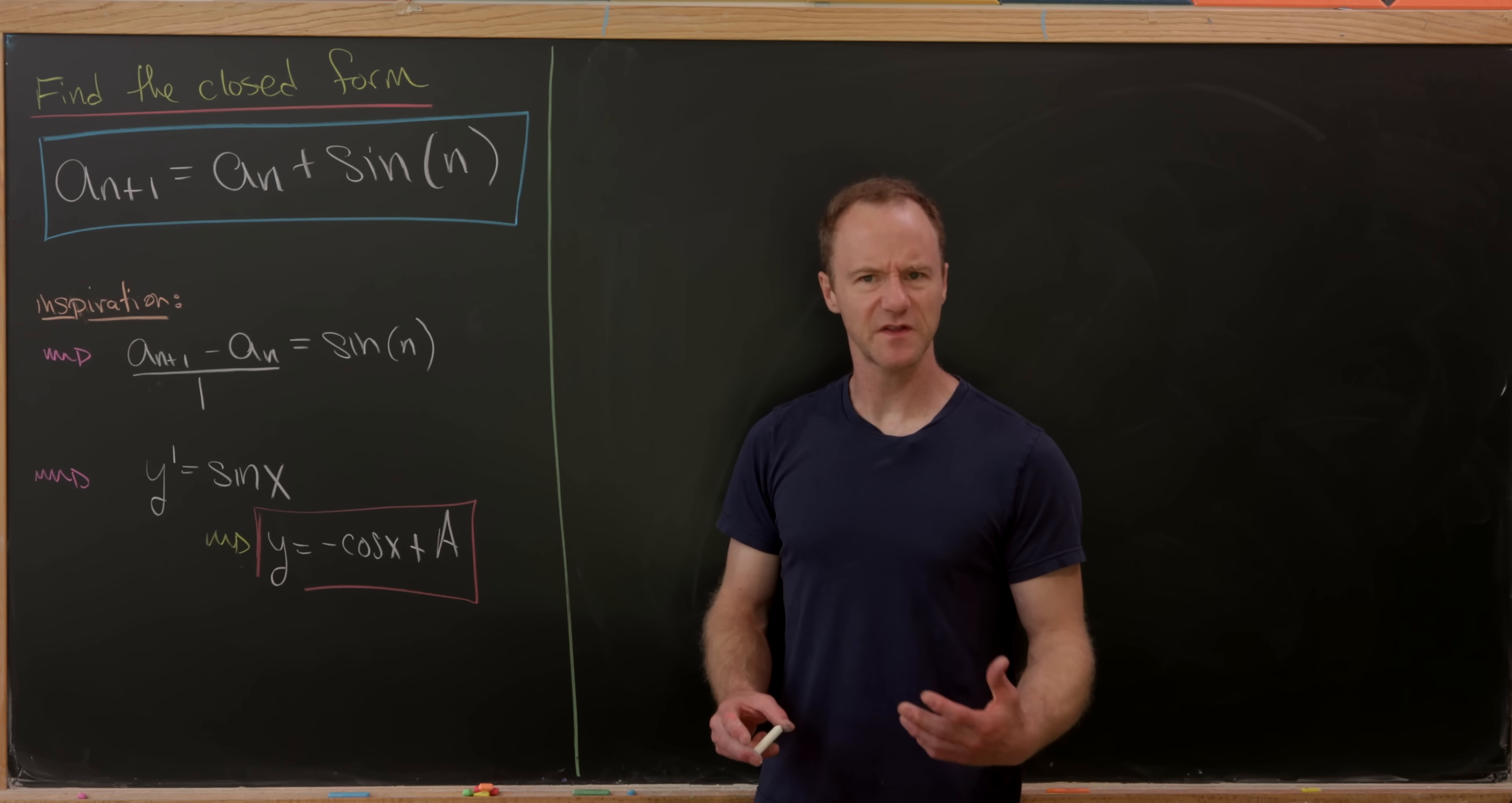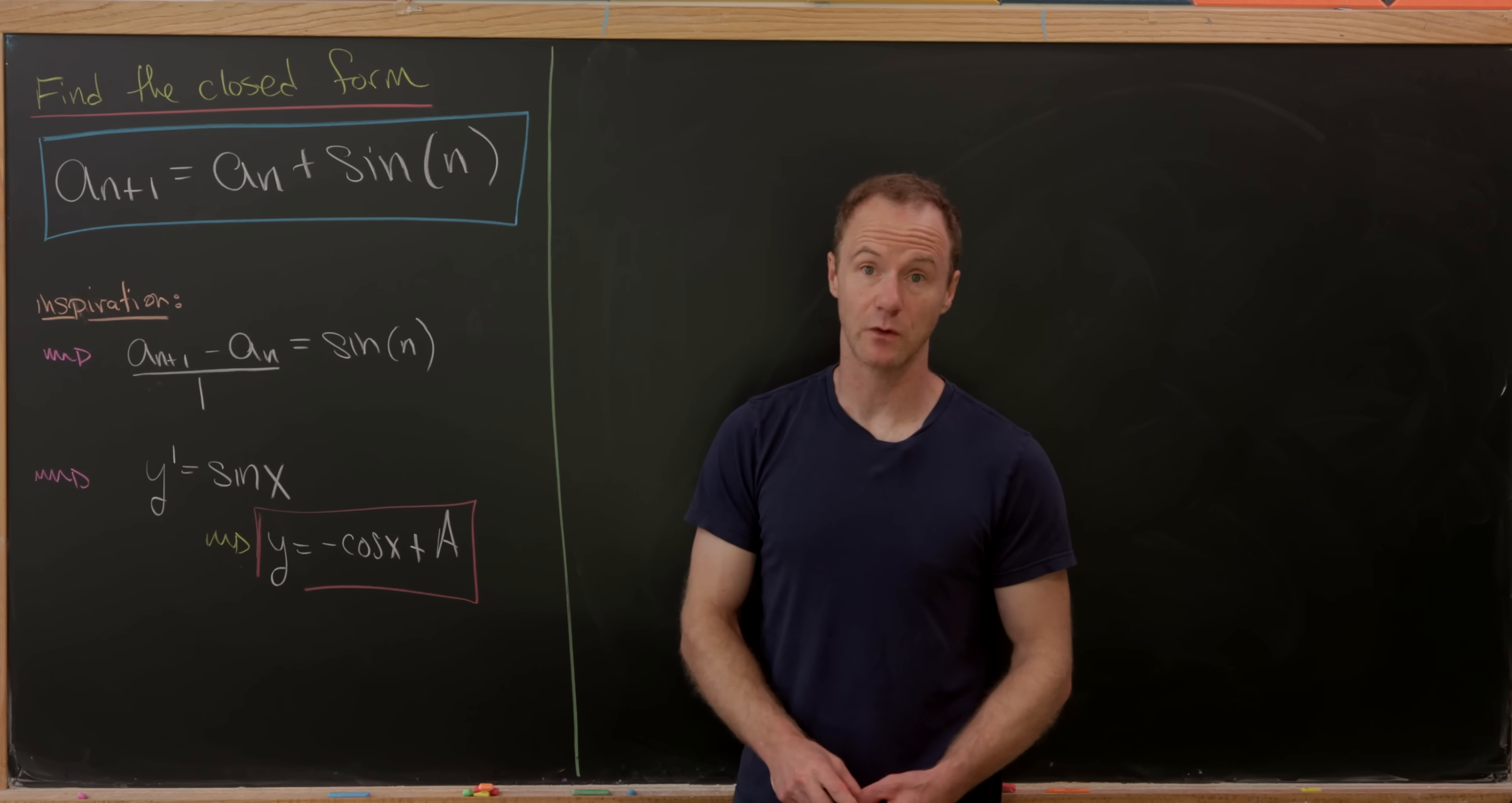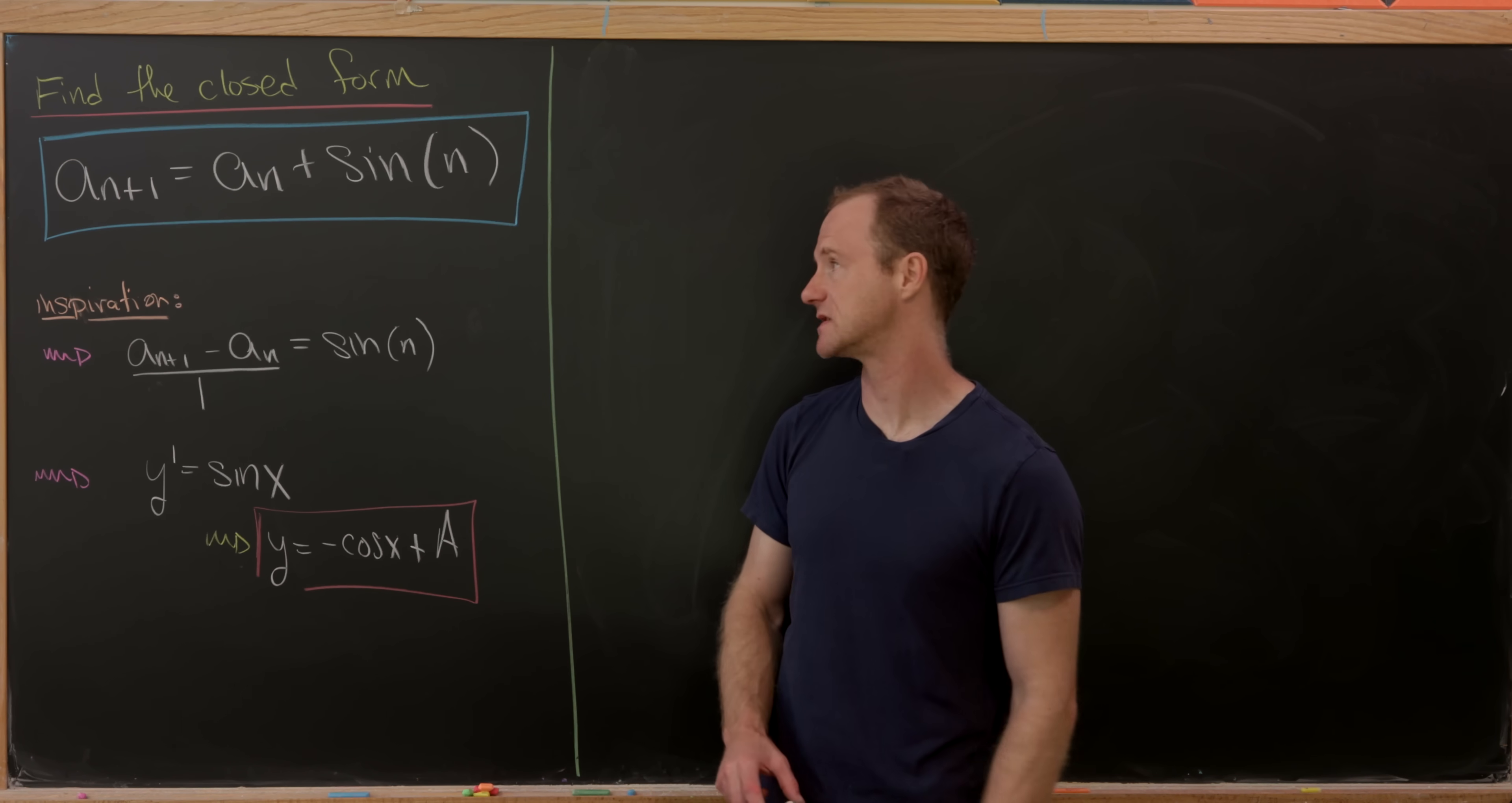But if we start thinking about derivatives, maybe we should pass to true derivatives. And maybe the continuous or the limiting version of this equation would simply be y prime equals sine of x, because we've got derivative over here and then sine over here. But that's easy to solve just by taking the antiderivative, we'll get minus cosine of x plus some constant a.